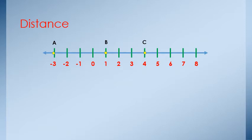Find the distance A, B. To find the distance A to B, the simple method is to count from A to B: 1, 2, 3, 4.